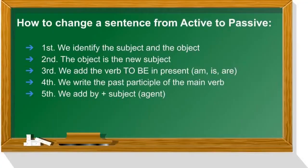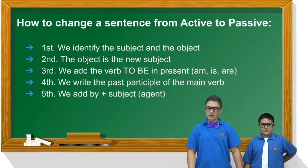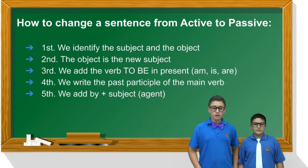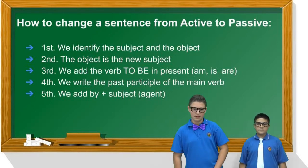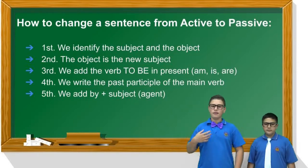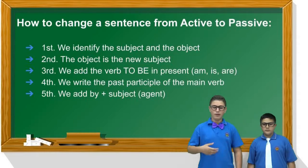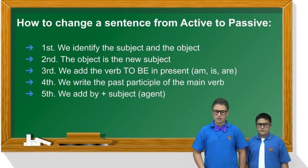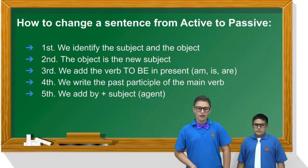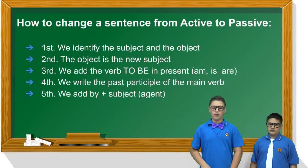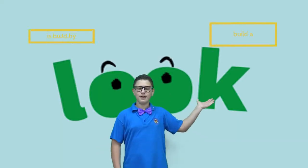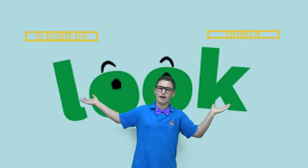It's very easy. There are five steps. First, we identify the subject and the object. Second, the object becomes the new subject. Third, we add the verb to be in present (is/are). Fourth, we write the past participle of the main verb. And finally, we add 'by' plus the subject, which is the agent. Look at these two sentences — one is the active and changed into passive.